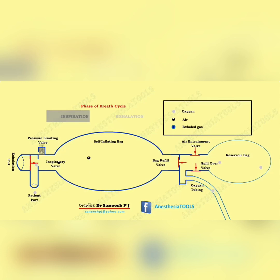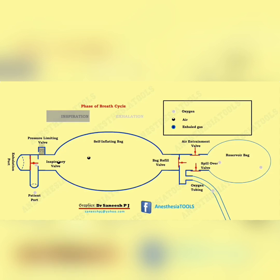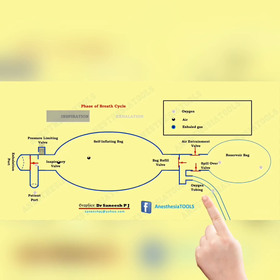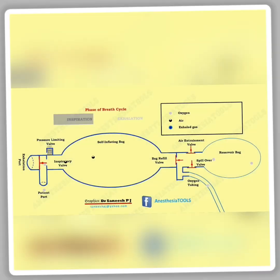At the patient end you can find the patient port and the inspiratory valve. At the other end you can find the reservoir bag is attached and an oxygen tubing is attached. You can also find the bag refill valve, the air entrainment valve, and the spillover valve.